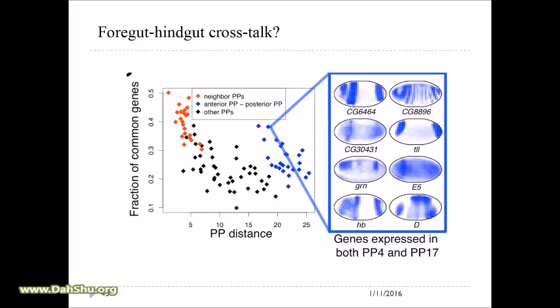Generally you see that is the case — if two principle patterns are close they share more genes, like 50 percent of genes. Then it comes down, and then it comes back up. If you look at that particular case, PP4 and PP17 — one is the foregut, one is the hindgut — they're part of the digestive system, they're the same tissue, therefore they share a lot of genes.